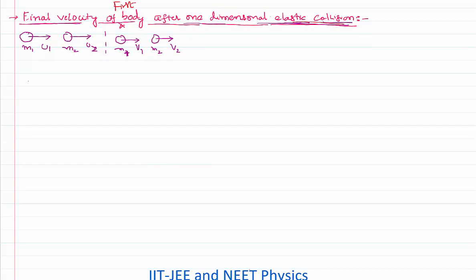Being a one-dimensional elastic collision, as per the definition, momentum is conserved. That means the initial momentum of the system equals the final momentum. Rearranging, I can get m1 terms to one side and write m1 times (u1 minus v1), and m2 terms to the other side as m2 times (v2 minus u2). We call this equation number one.